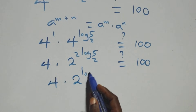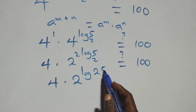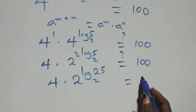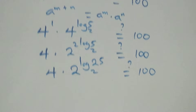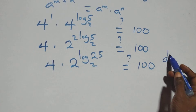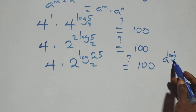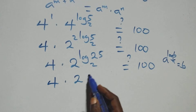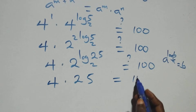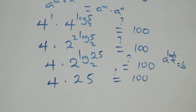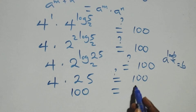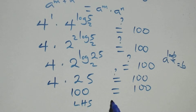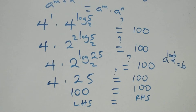This follows the rule: a raised to the power log base a of b equals b. So we have 4 times 25, which equals 100. Since 4 times 25 equals 100, we have left hand side equals to right hand side, and therefore we confirm the answer is correct.